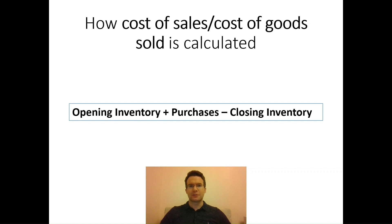Cost of sales is the money that we spent directly on actually producing a product, for example the raw materials used in its production. We might have purchased a certain amount during the year of raw materials, but that doesn't necessarily mean that that is going to be the figure used for cost of sales. Let's have a look at the formula in more depth.